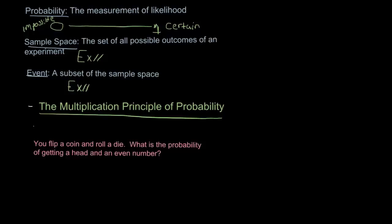So probability you can view as a measurement of likelihood. And it's a scale measurement that ranges from 0 to 1, where 0 means that the event is impossible and a probability of 1 means that event is certain. And the spectrum ranges in between.